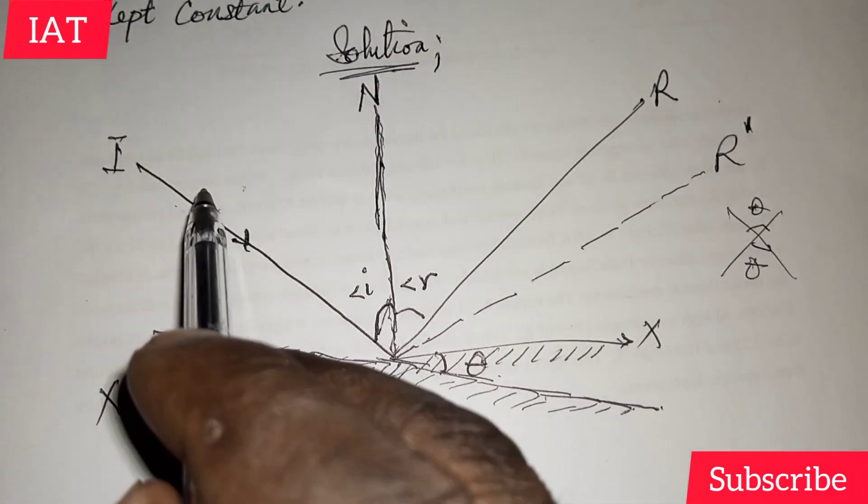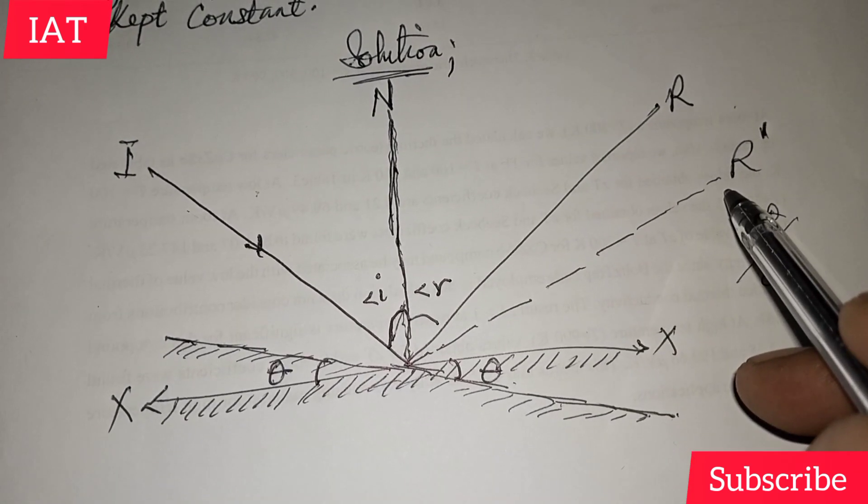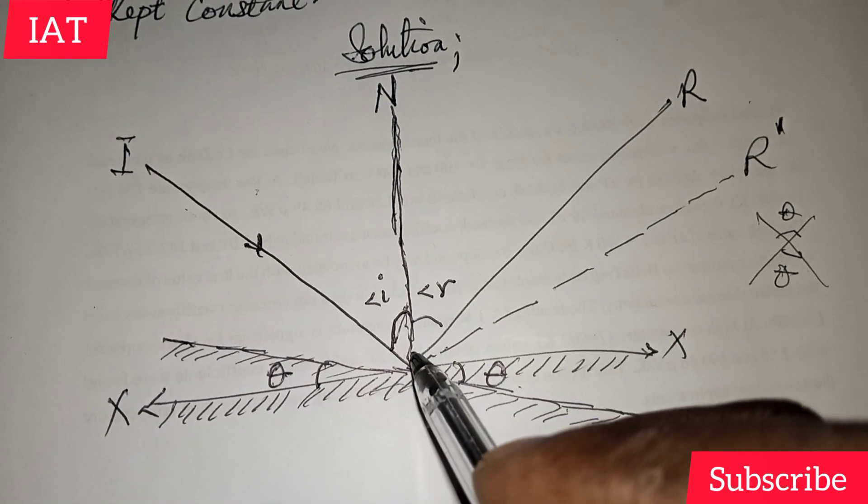Because when you rotate this, this angle of incident creates this reflected angle and also creates another normal.